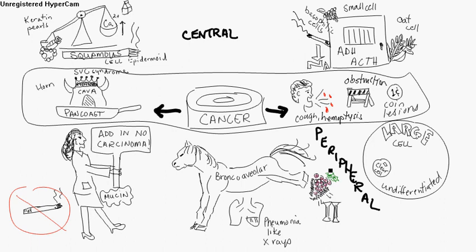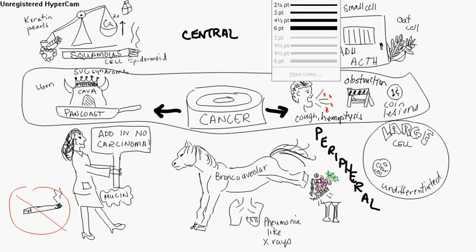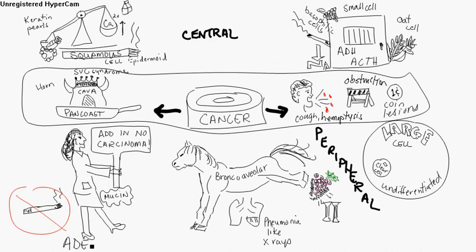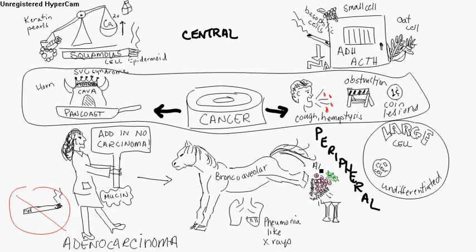Peripheral lung tumors are at the bottom. Over here you've got adenocarcinoma, which is usually more prevalent in women and non-smokers — think of Dana Reeves. You get mucin production. Large cell carcinoma is undifferentiated clear cells; it's pretty rare but might show up on a test question. You also have a type of adenocarcinoma called bronchioalveolar carcinoma, which looks a lot like pneumonia on x-ray — you get columnar cells surrounding the alveoli but not infiltrating them.